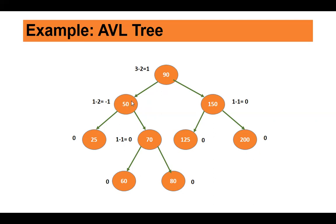Now move to the root node 90. The balance factor is height of left subtree minus height of right subtree. Taking the longest path on the left side: it is one, two, and three. On the right side it is one and two. So three minus two gives a balance factor of one for node 90. Similarly for node 150, one minus one gives a balance factor of zero. So this is a perfect AVL tree which is height balanced and is a binary search tree. Every time you carry out an insertion or deletion, you need to maintain this balance factor by performing rotations.